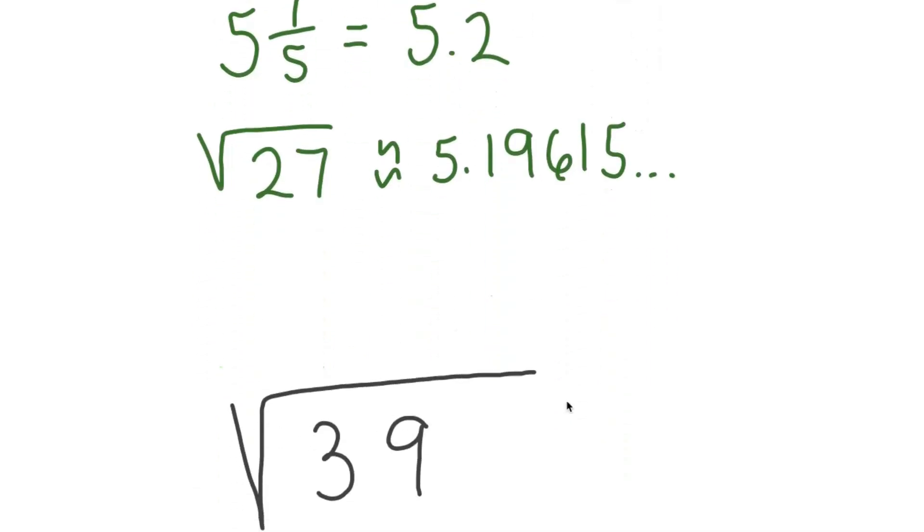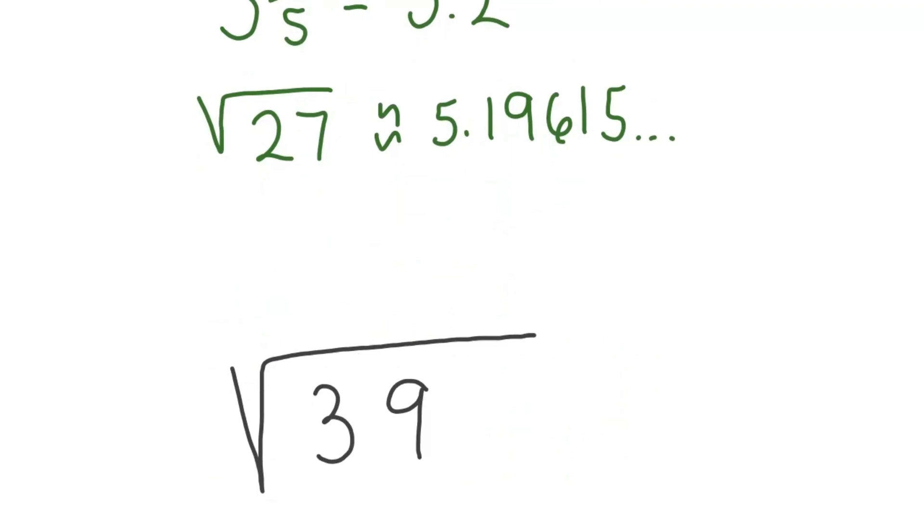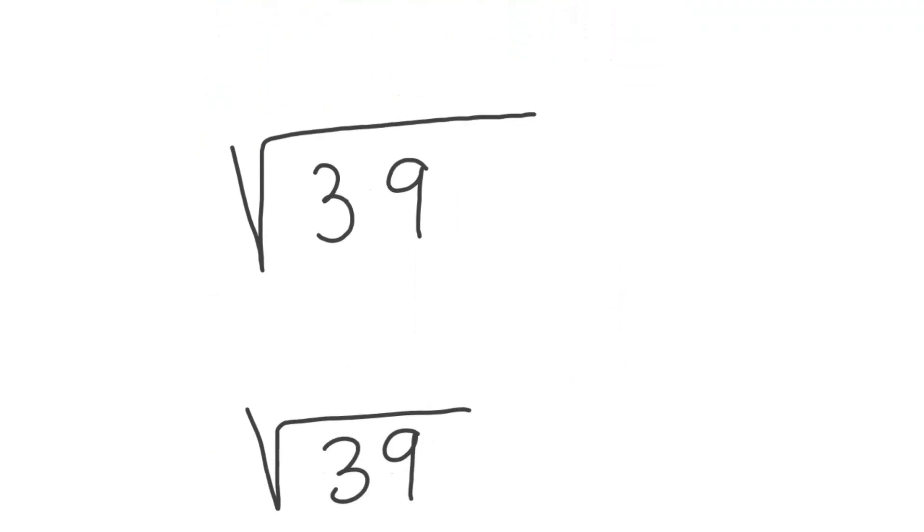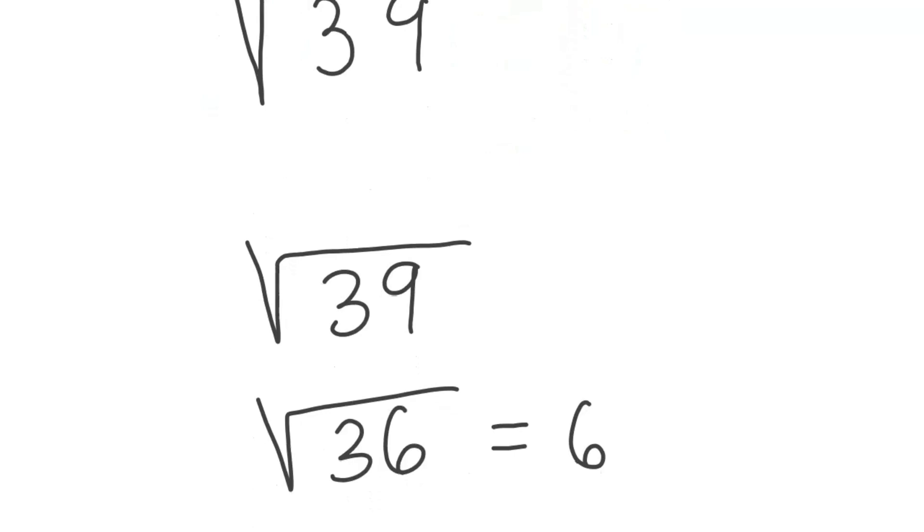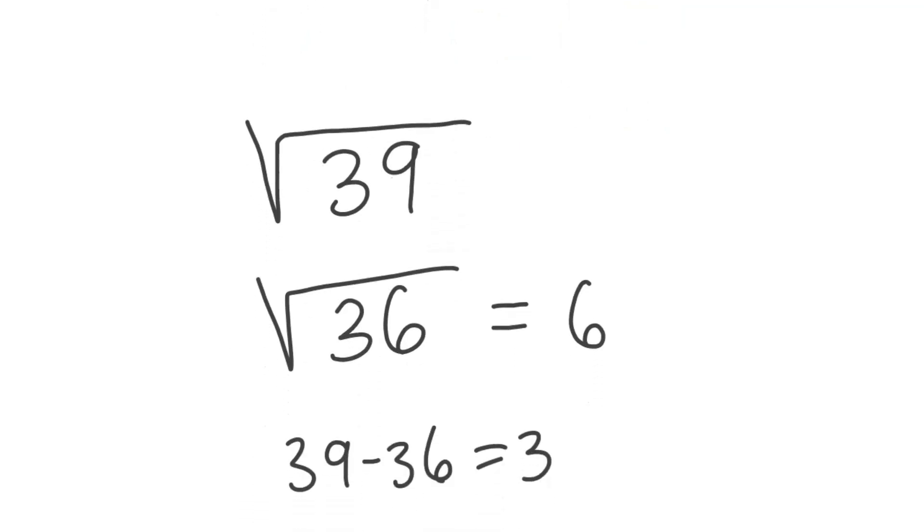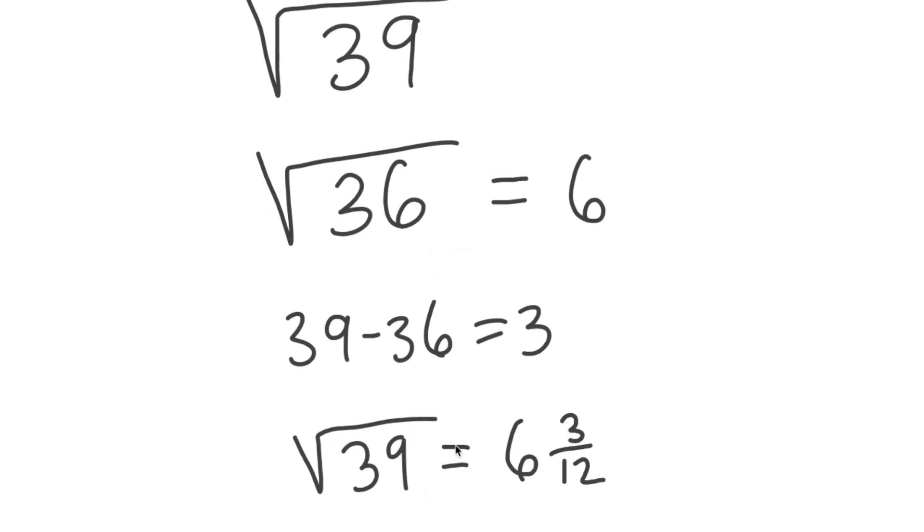Let's try another example. So we got square root 39. Square root 39, the largest perfect square underneath that is square root 36. Square root 36 is 6. Find the difference between 39 and 36, and boom, we're done.